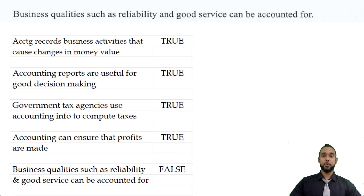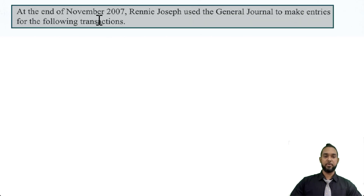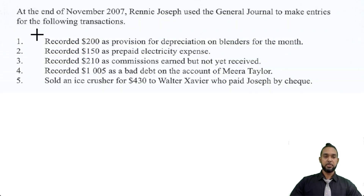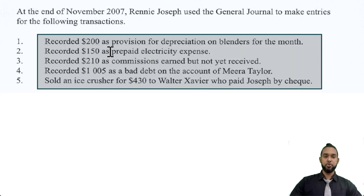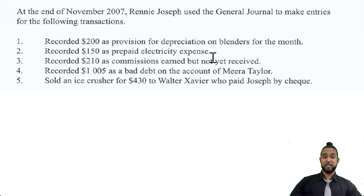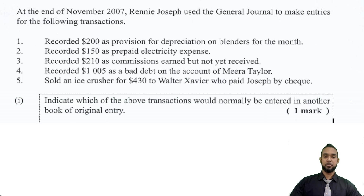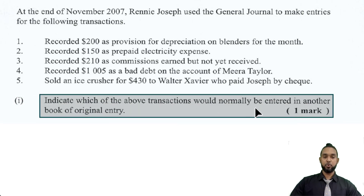That's part A. Let's take a look at part B. They're telling us that at the end of November 2007, Rennie Joseph used the general journal to make entries for the following transactions. We have five transactions: recorded $200 as provision for depreciation on blenders for the month; recorded $150 as prepaid electricity expense; recorded $210 as commissions earned but not yet received; recorded $1,005 as a bad debt on the account of Meera Taylor; and sold an ice crusher for $430 to Walter Xavier who paid Joseph by check. The first thing they want us to do is indicate which of the above transactions would normally be entered in another book of original entry.